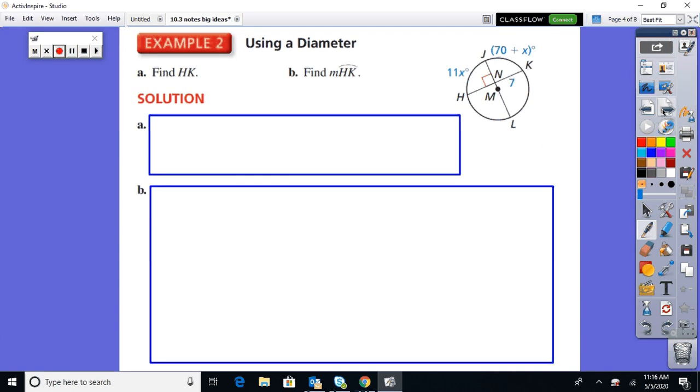Second example. Here we go with this perpendicular bisector diameter thing. Find HK and find the measure of arc HK. So straight up HK is the chord length. Circle M, so I'm going through the center. So I know I've got a diameter being perpendicular to a chord. If that is the case, the theorem tells me that H to M is the same as K to M.